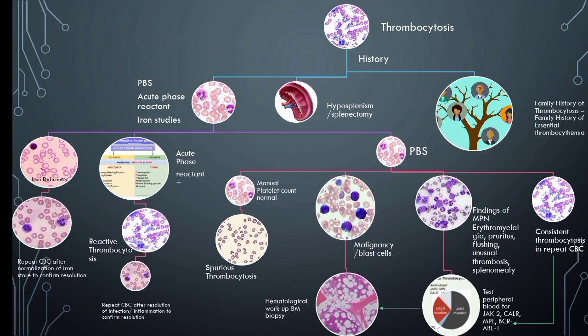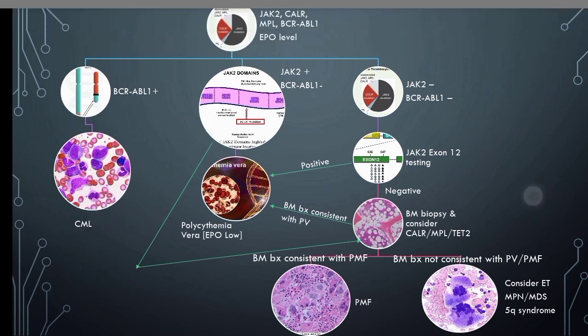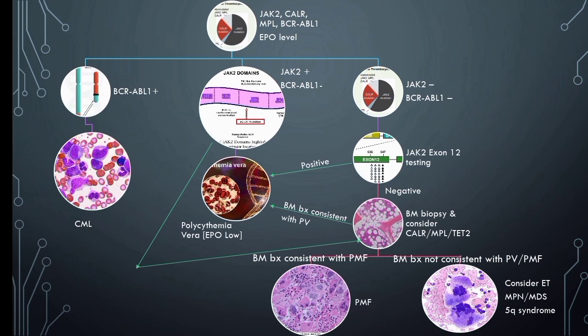After testing, if BCR-ABL1 fusion comes positive, it suggests chronic myeloid leukemia. If BCR-ABL1 is negative and JAK2 V617F is positive and EPO levels are low, it suggests polycythemia vera. JAK2 V617F mutation is present in 95 percent of cases of polycythemia vera.